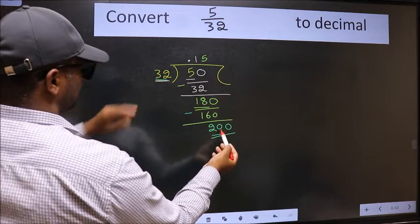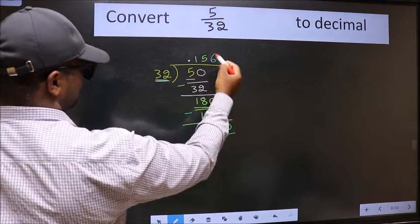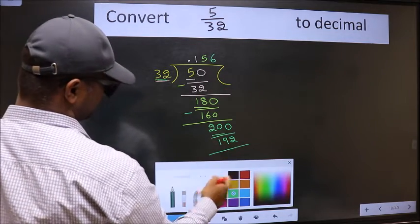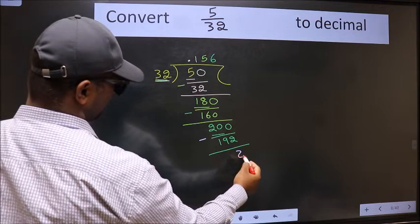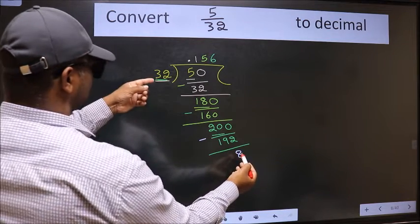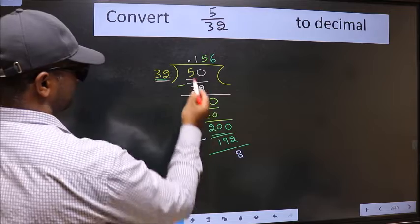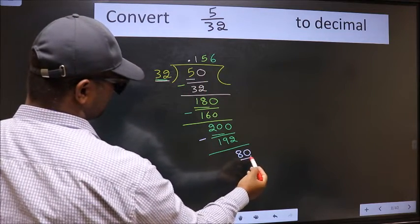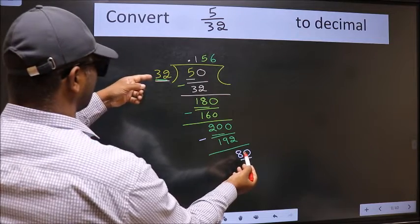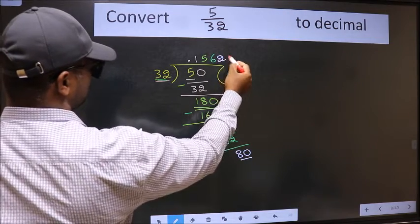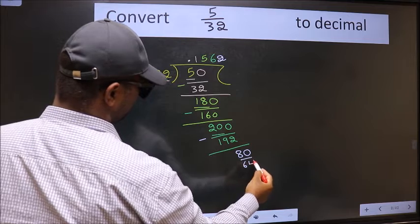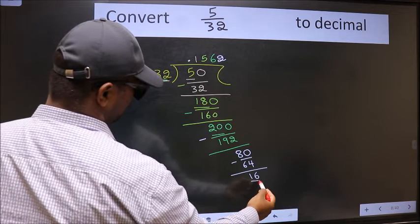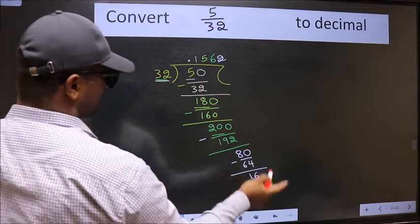We subtract to get 8. Since 8 is smaller than 32 and we already have the decimal, we directly take a 0, making 80. A number close to 80 in the 32 times table is 32 × 2 = 64. We subtract to get 16.